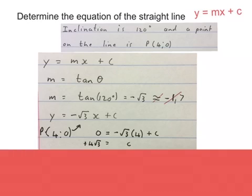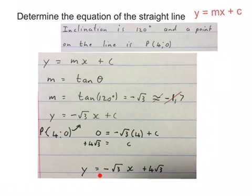So c equals 4√3 and now we can substitute that back into c there. Then our final answer is y equals -√3x plus 4√3. Please stop the video and see what we did.